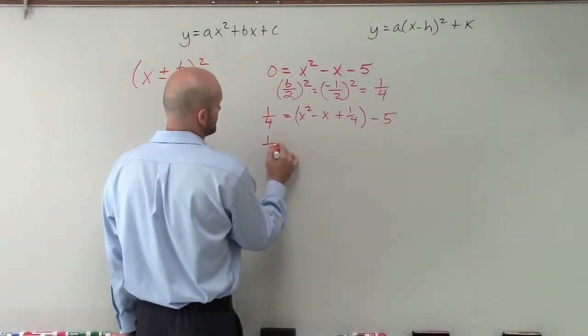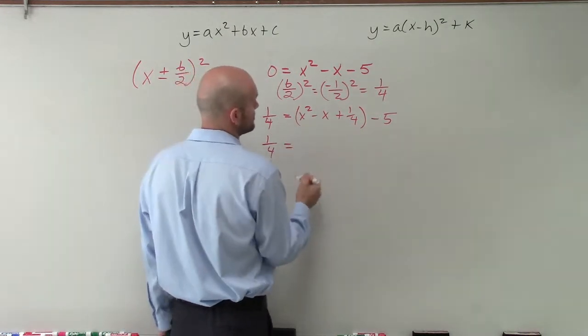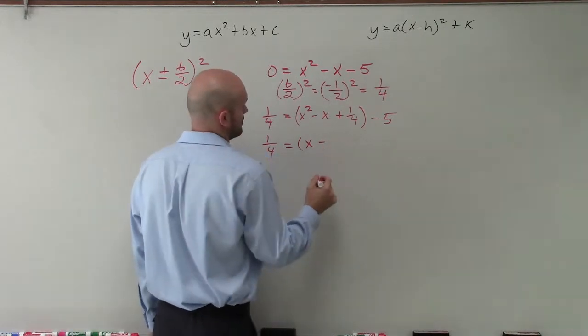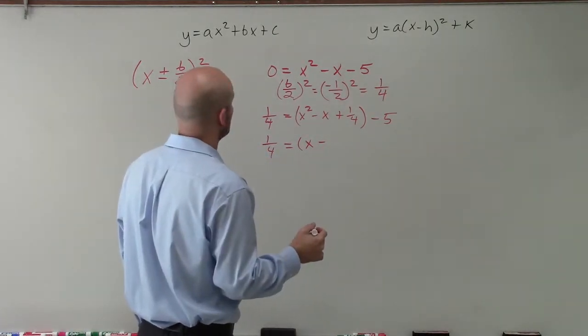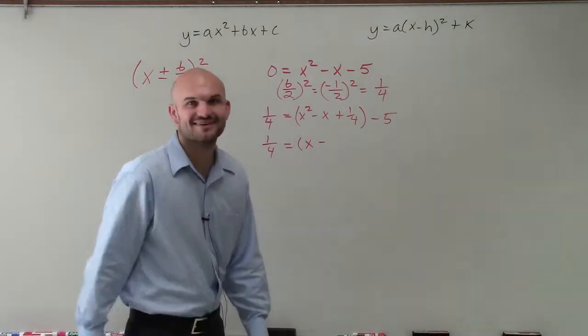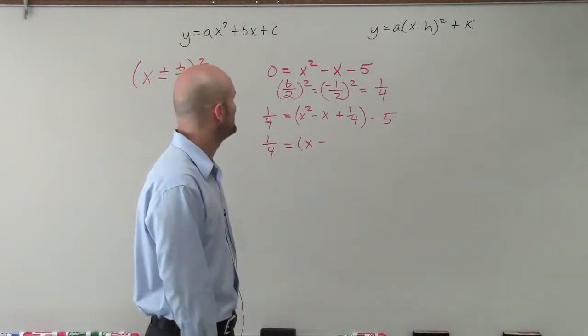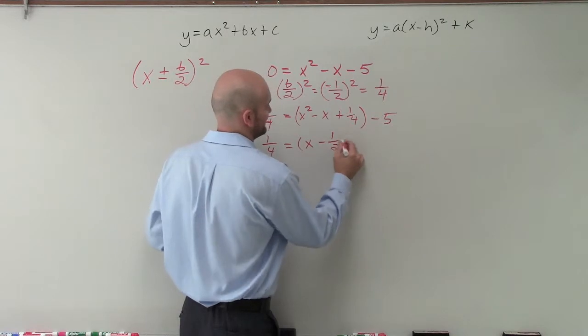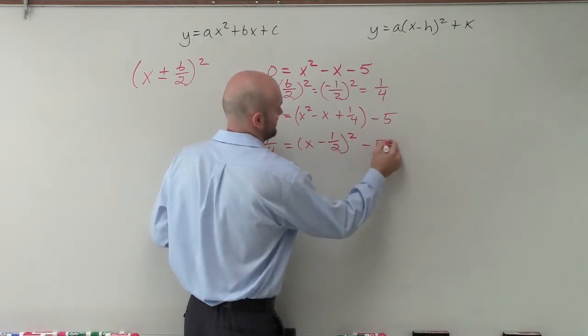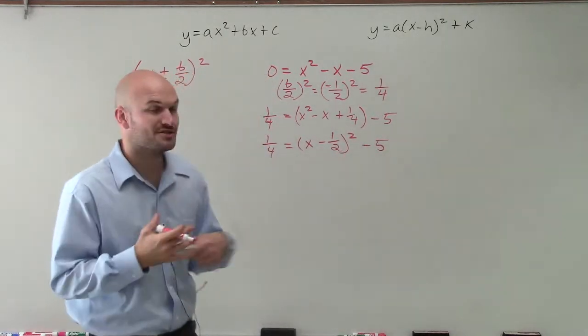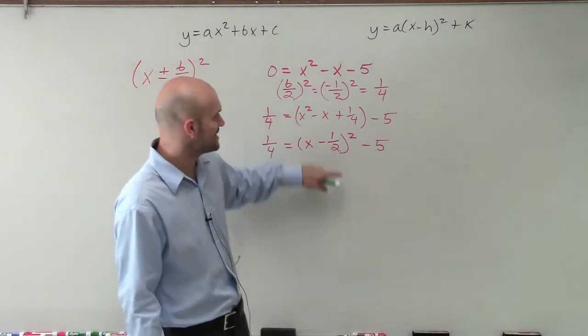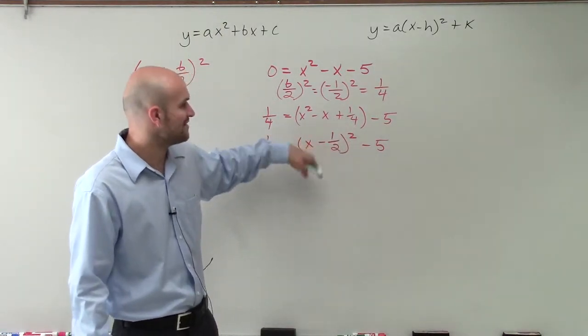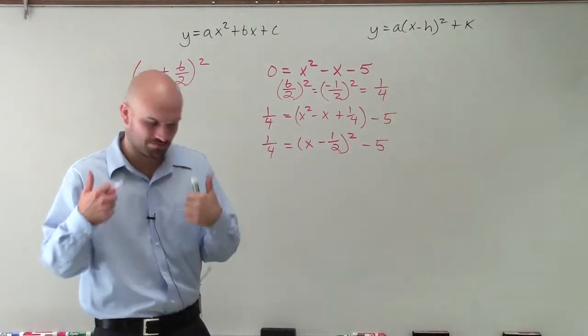So what we'll have is 1 fourth equals, let's see, x minus, oh, I forgot to divide it by 2. No, it's 1 divided by 2. OK, no, I got it. OK, there we go. And let's just double check to make sure that works. Negative 1 half times negative 1 half does give people a positive 4, positive 1 fourth. Negative 1 half plus negative 1 half gives us a negative 1. All right, we're good to go.